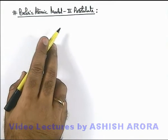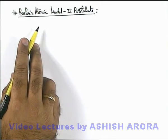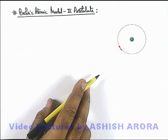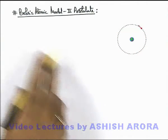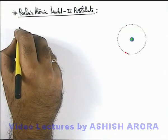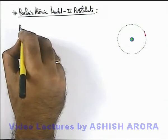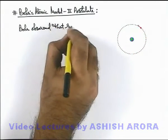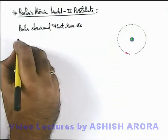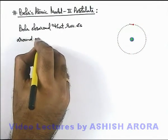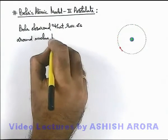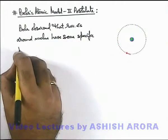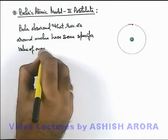Let us discuss the second postulate of Bohr's atomic model, which is also related with an electron revolving around the nucleus. Have a look at the situation we have already seen in the previous section. The second postulate states that, according to Bohr's model, revolving electrons around the nucleus have some specific values of angular momentum.